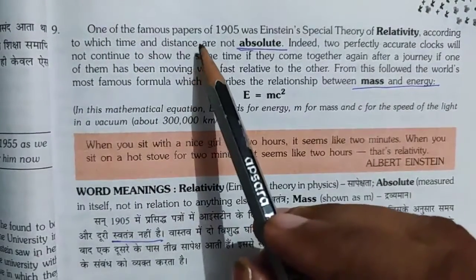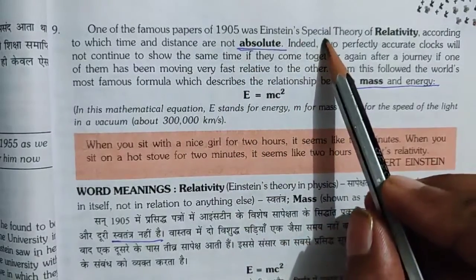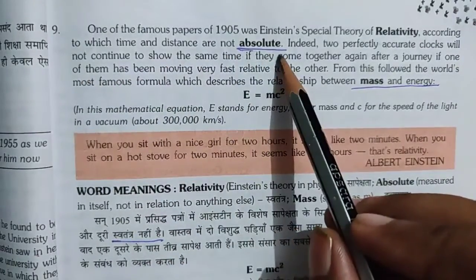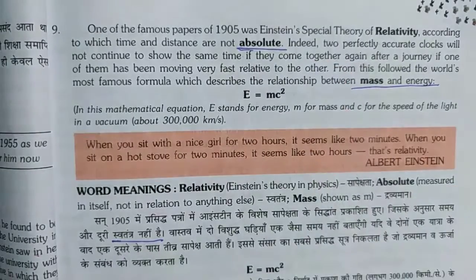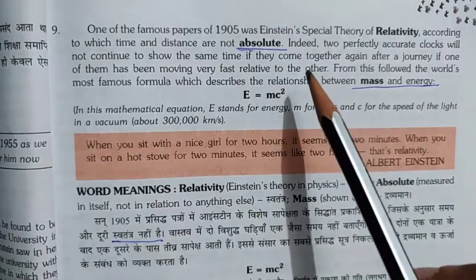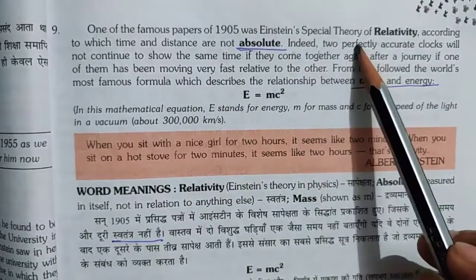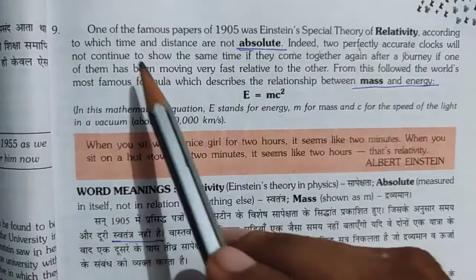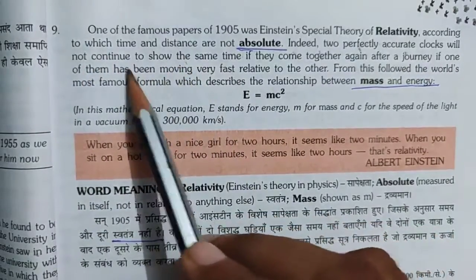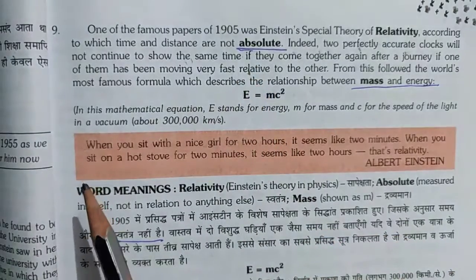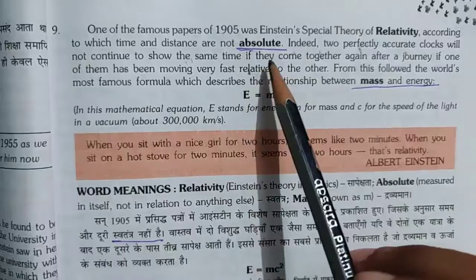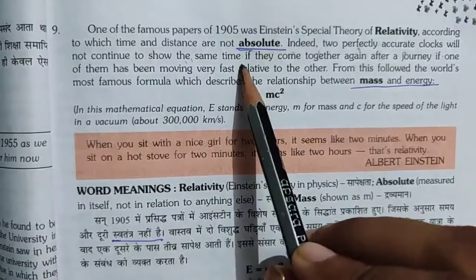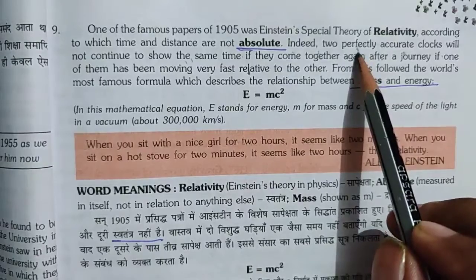One of the famous papers of 1905 was Einstein's special theory of relativity, according to which time and distance are not absolute. Two great clocks will not continue to show the same time.